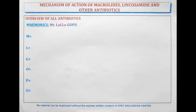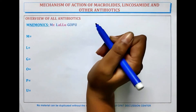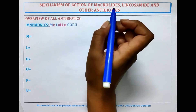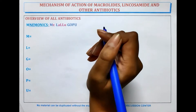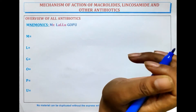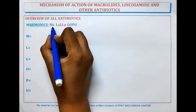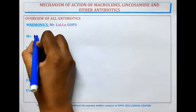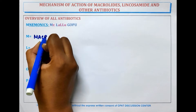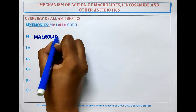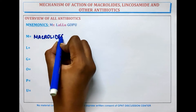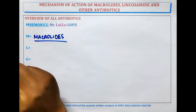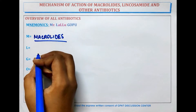The mnemonic for remembering these antibiotics is MR. LALUKOP. M stands for Macrolides — Macrolides is itself a category of antibiotics. L is for Lincosamide.